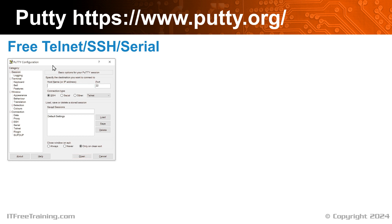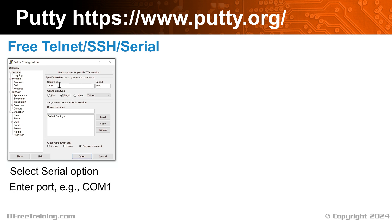To start with, run PuTTY and then select the option Serial. This will change the host name to Serial Line. By default, it will become COM 1. In this case, my serial port is Serial Port 1, thus I will leave it on this. If your serial port is different, you will need to change it. For speed, the default is 9600. Nowadays, this speed will work with most devices. If it does not work, consult your documentation for your device to determine which speed you need to use.